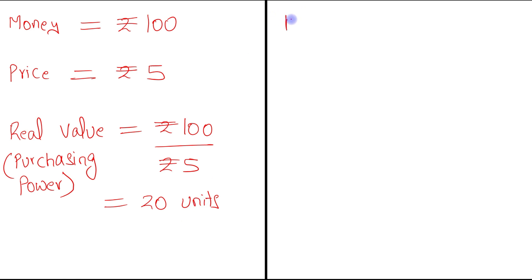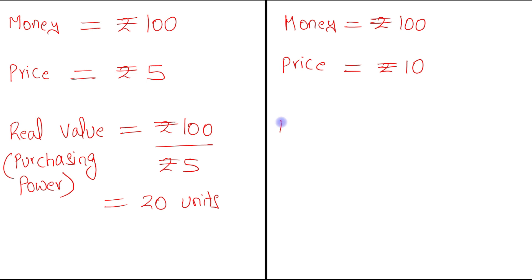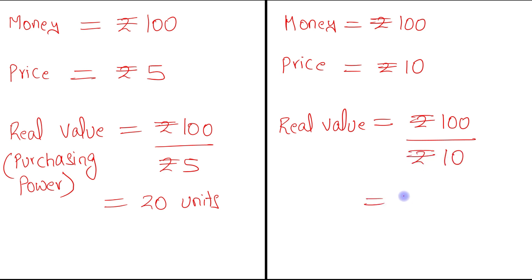Now assume the money you had is the same, which is rupees 100, but the price level in an economy has increased from rupees 5 to rupees 10. In that case, the real value or purchasing power will be rupees 100 divided by rupees 10, which is 10 units. So when the price level increases from rupees 5 to rupees 10, the real value of the money or purchasing power is reduced from 20 units to 10 units, because now you are able to purchase only 10 units.